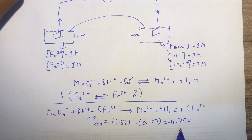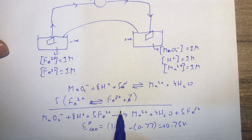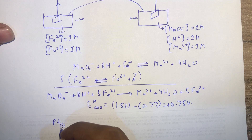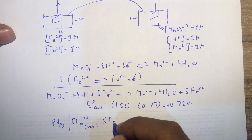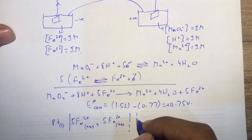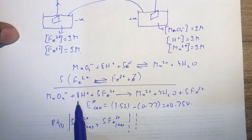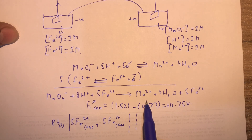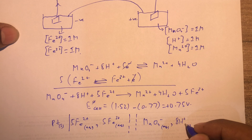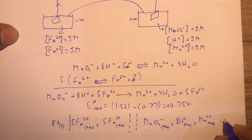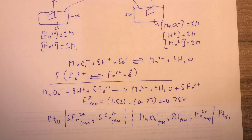E°cell = E°right − E°left = 1.52 − 0.77 = +0.75 V. It's positive so the reaction is feasible, and greater than +0.3 V so the reaction goes to completion. For the conventional cell representation: Pt (solid), electrode interface, Fe²⁺ (aqueous) comma Fe³⁺ (aqueous), salt bridge, then MnO₄⁻ (aqueous) comma 8H⁺ (aqueous) comma Mn²⁺ (aqueous), electrode interface, Pt (solid) with a final electrode interface.